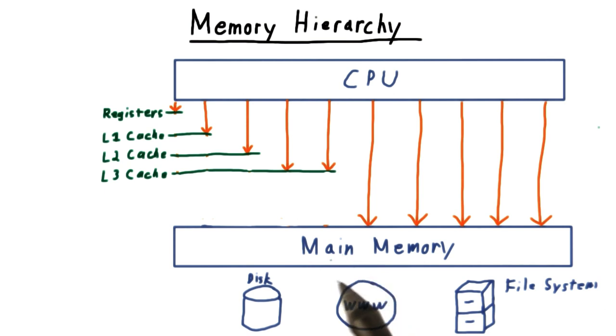Even main memory, however, we can think of as a cache for what is on disk, or we can also think about maybe main memory as a cache for what's on the file system.